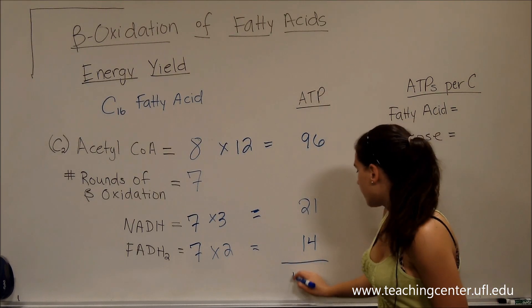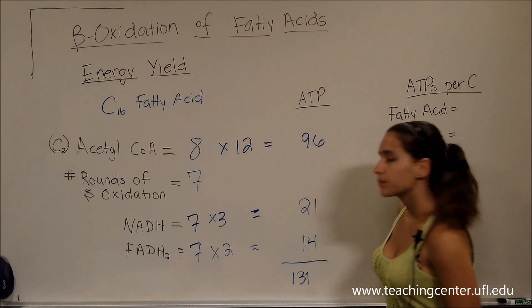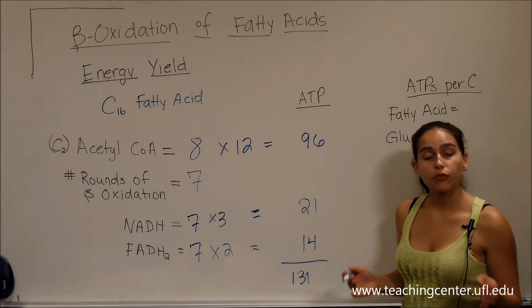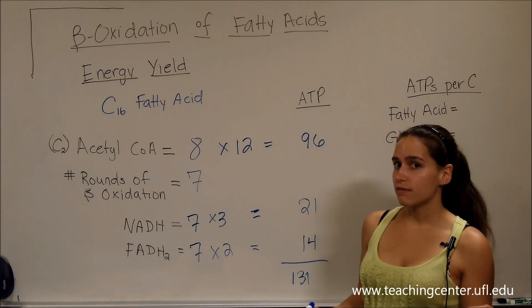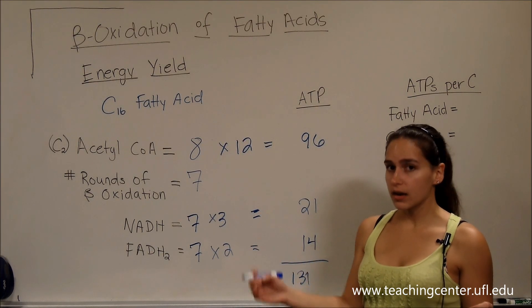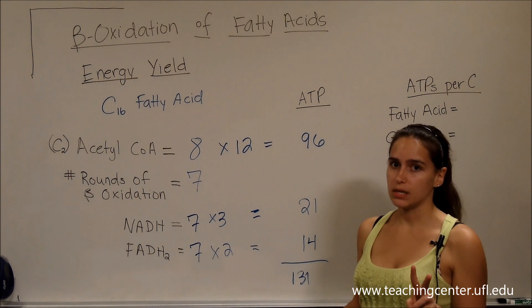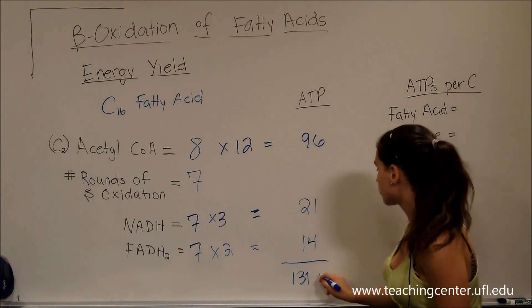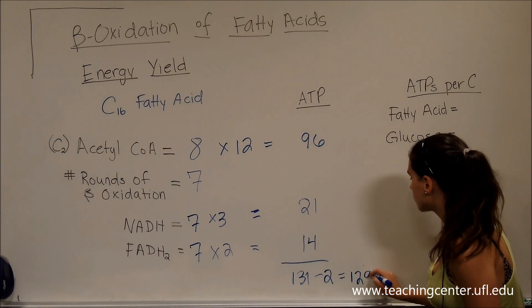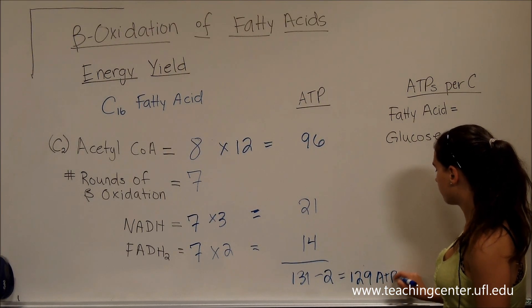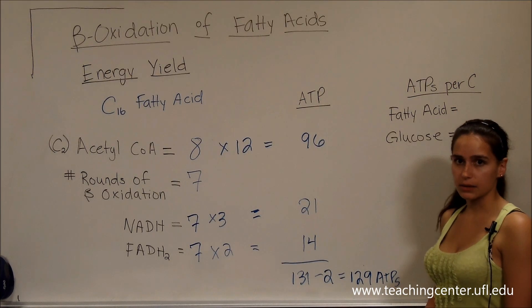That's going to be a total of 131 ATPs. But we recall from the first step of fatty acid oxidation, we activated that fatty acid and made it fatty acyl CoA, we used two ATPs, right? So we have to subtract those. And then we're going to get a grand total of 129 ATPs for our 16 carbon fatty acid.